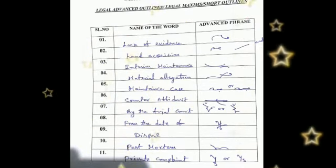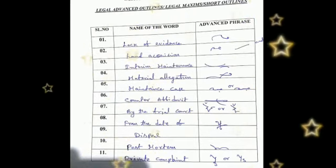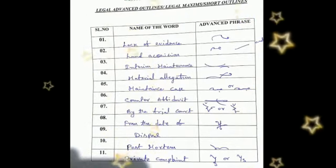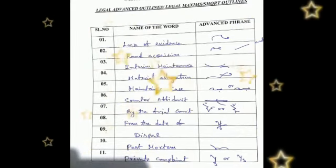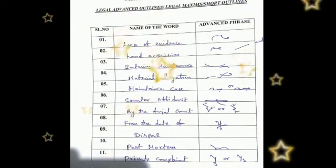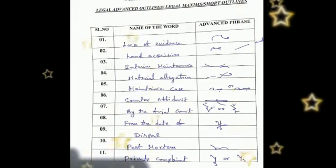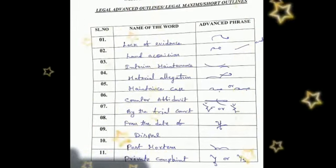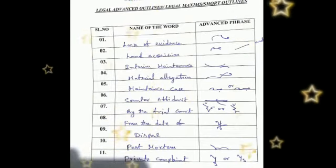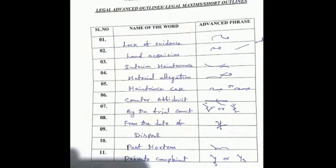The last word is 'private complaint.' The outline of the word is PER above the line, then place a hook for V, write T, and thereafter P-L in half form and attach N hook for 'complaint.' Thanks for listening. Thank you.